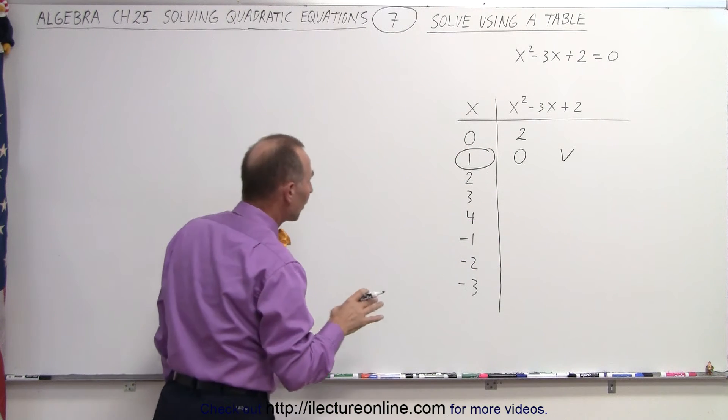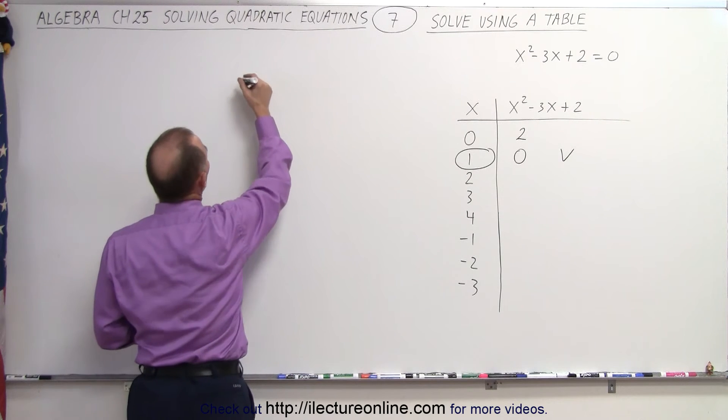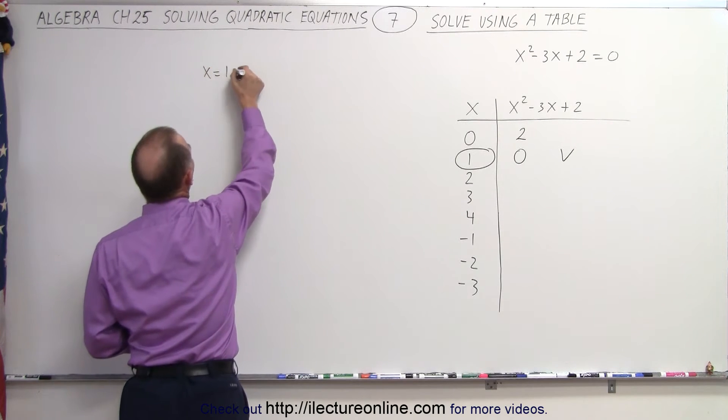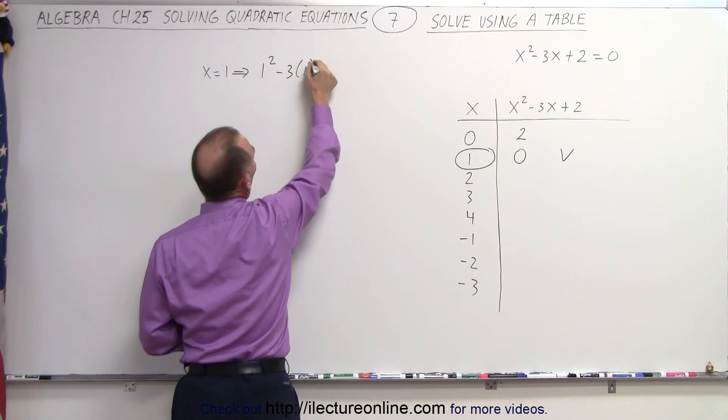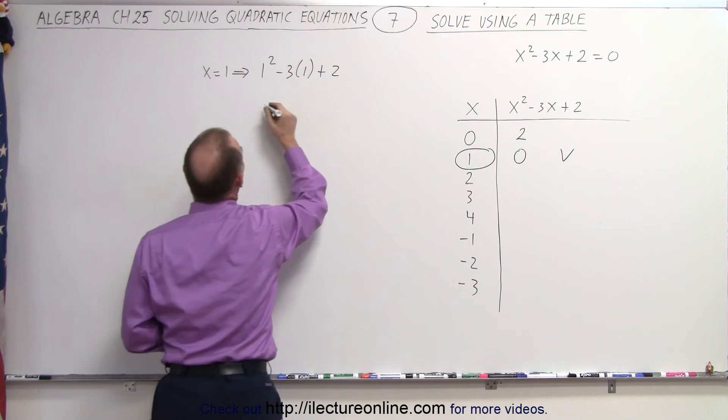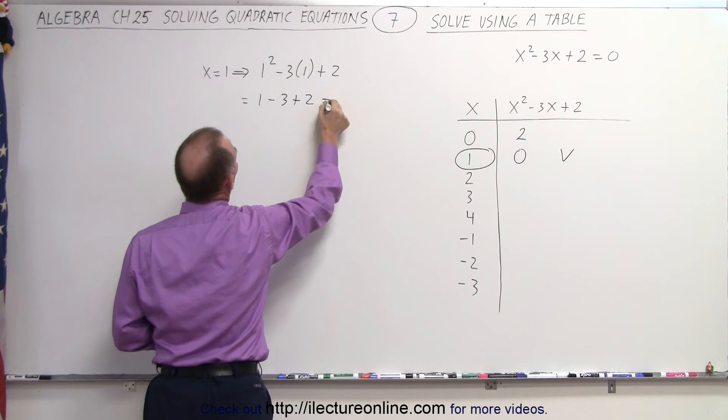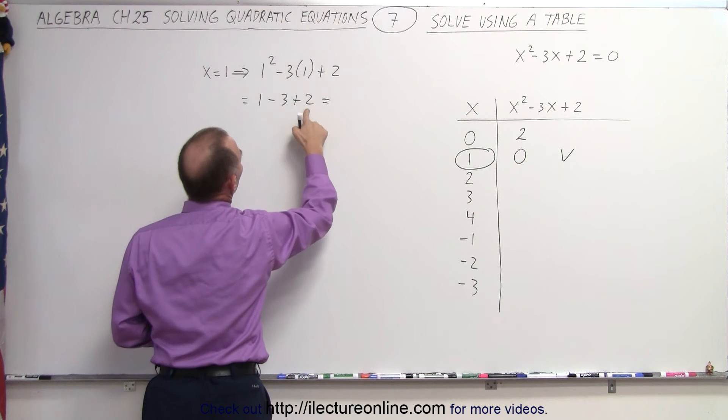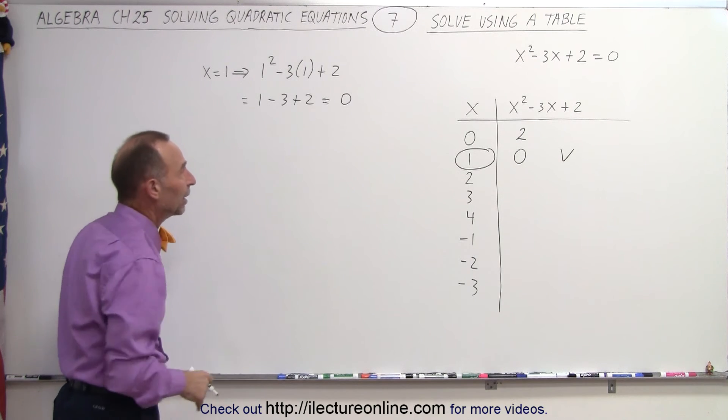If you have trouble doing that in your head, that's alright. When x = 1, our equation becomes 1² - 3(1) + 2, which equals 1 - 3 + 2. That's 1 + 2 = 3, minus 3 = 0.